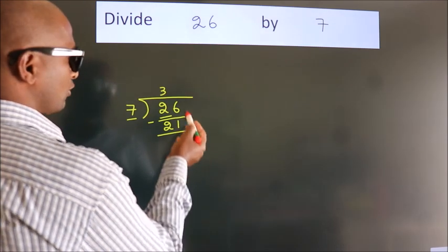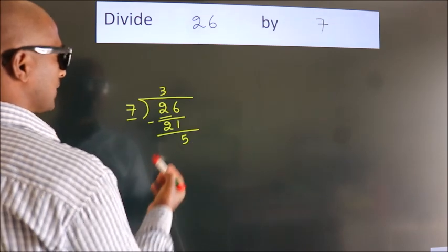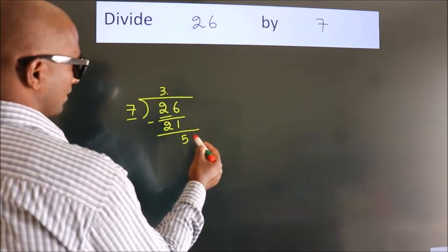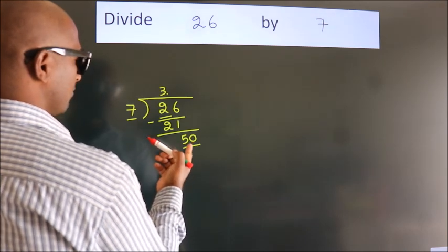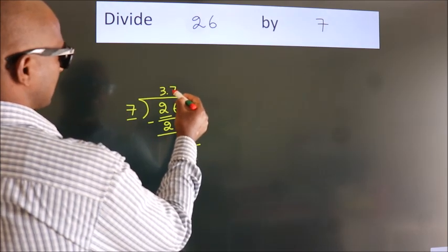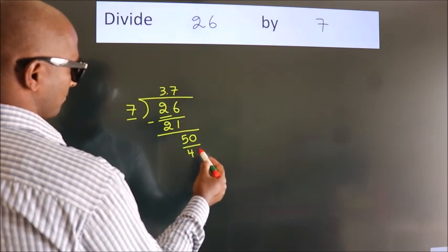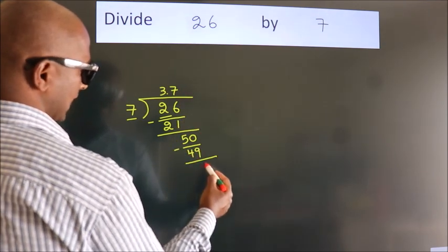After this, there are no more numbers to bring down. So what we do is put a dot and take 0, giving us 50. A number close to 50 in the 7 table is 7 sevens, 49. Now we subtract. We get 1.